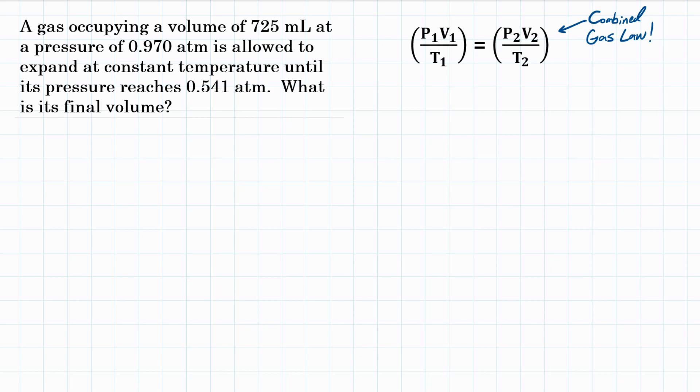Alright everyone, the problem says a gas occupying a volume of 725 milliliters at a pressure of 0.970 atmospheres is allowed to expand at constant temperature until its pressure reaches 0.541 atmospheres. What is its final volume?